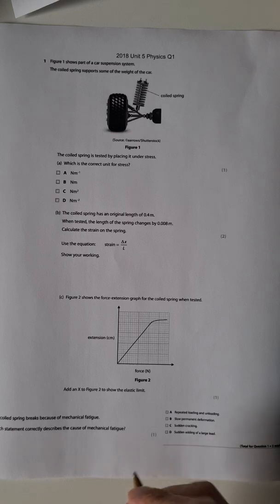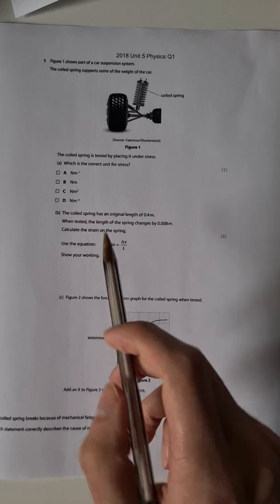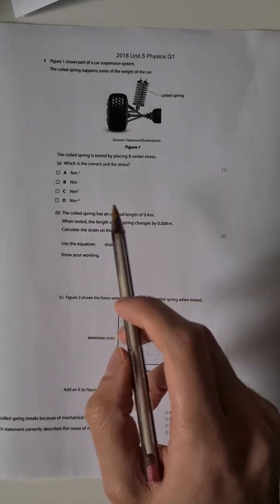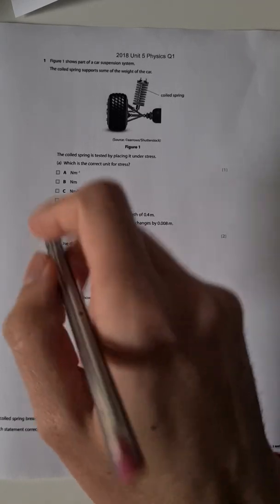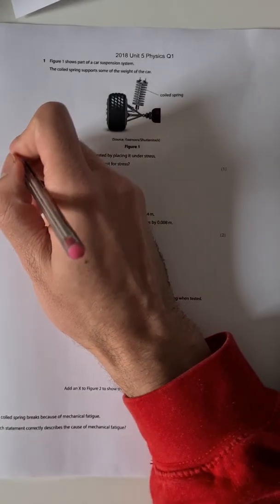In this first one we've got a car suspension system. The cord spring supports some of the weight of the car and it's tested by placing under stress. Which is the correct unit for stress?